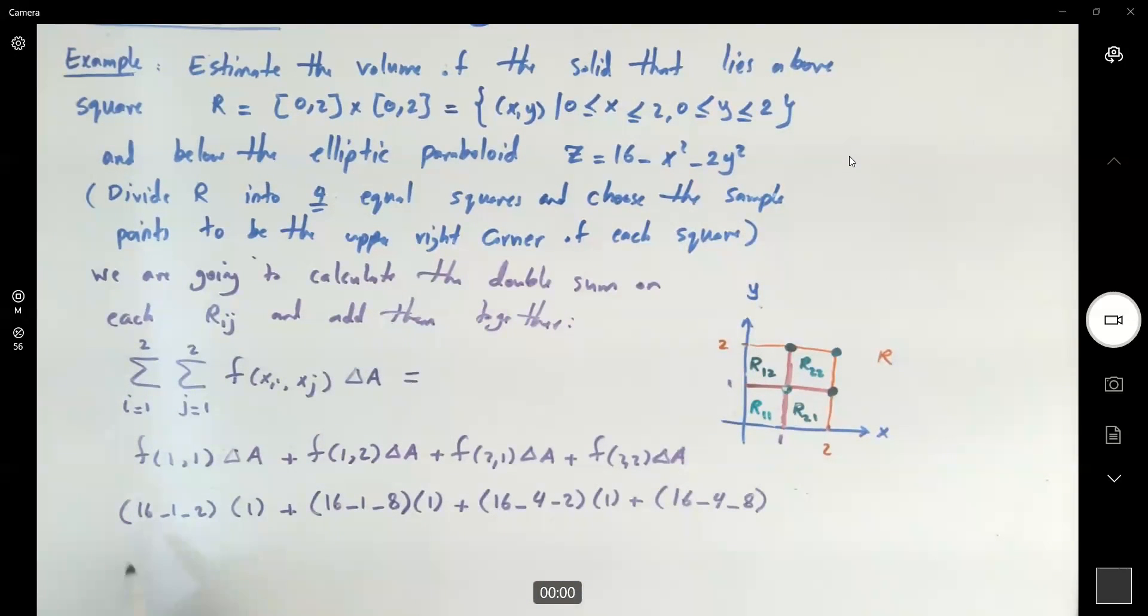So if we do the calculation here, we have 13 plus 7 plus 10, and here you get 4. This is 34.